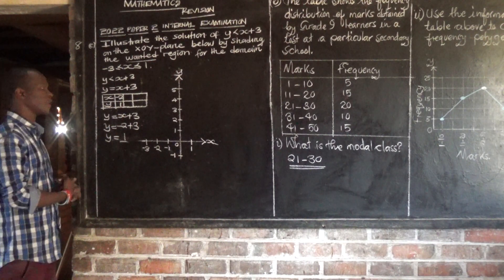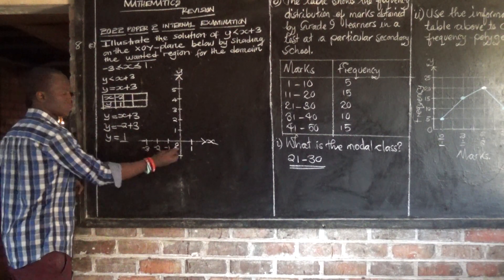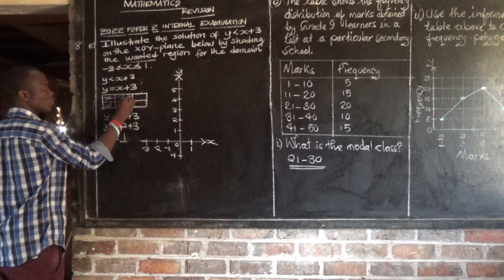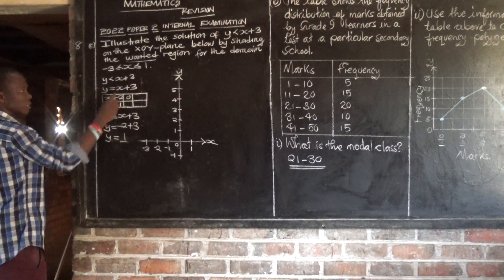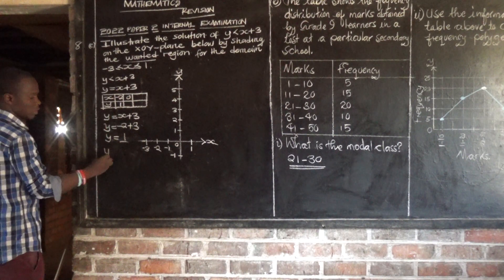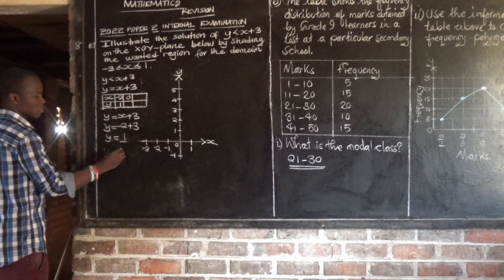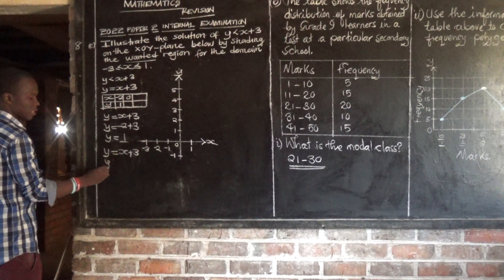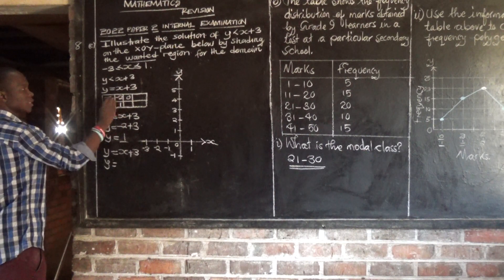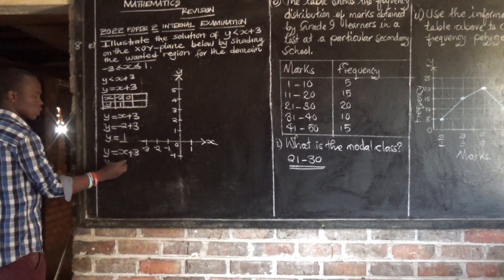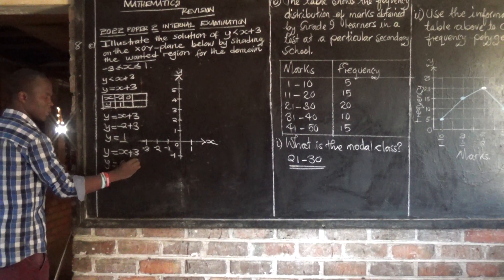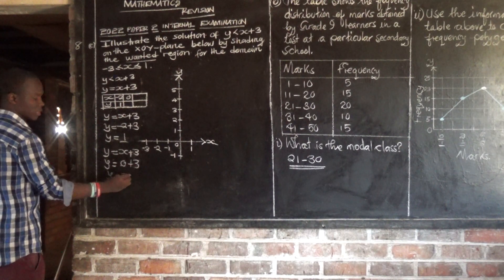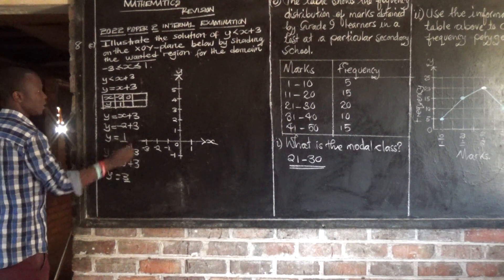Then get another value. What if x is 0? What would y be? Let x be 0 in the equation y equals x plus 3. So y is equal to 0 plus 3, which gives us 3.